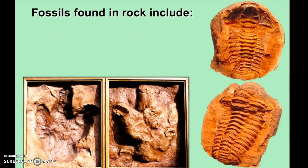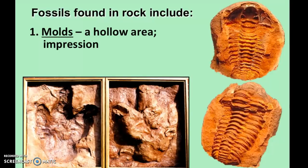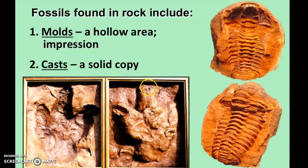The first type of fossil found in rocks is a mold. If you've ever pressed your hand into play-doh and pulled it out, you've made a mold — a hollow impression. In this example, a theropod dinosaur stepped into mud and left a footprint, which is a mold. A cast is the second type — a solid copy. When a mold gets filled in with sediment, it produces a negative and positive. You can see this with the trilobite fossil — it has a mold, gets filled with dirt, and can be split apart to reveal the cast inside.